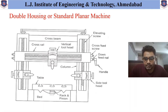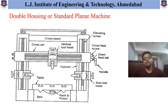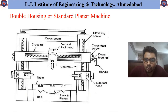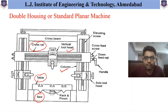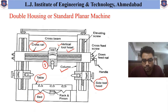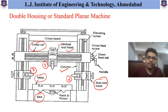Let's have a look at the simple 2D figure of the standard Planner Machine. Most of the parts are common: it has a table, bed, column, cross rail, and tool head. In this case, there is one vertical tool head and two side tool heads — so three different tool holders are provided, allowing machining at three different locations simultaneously.